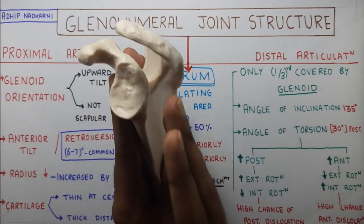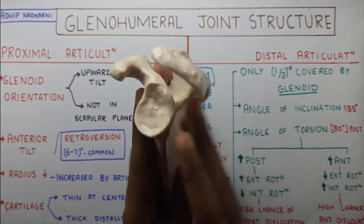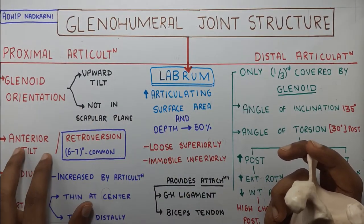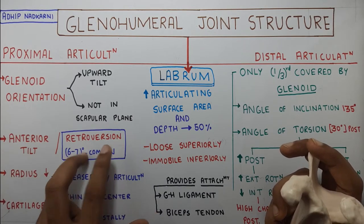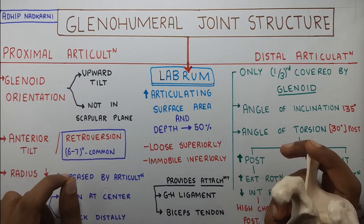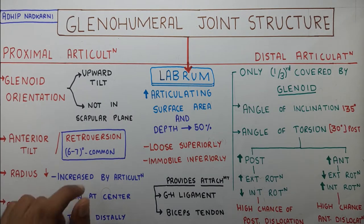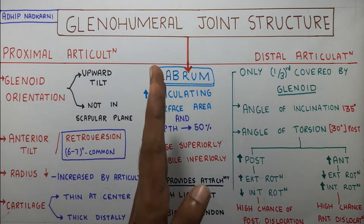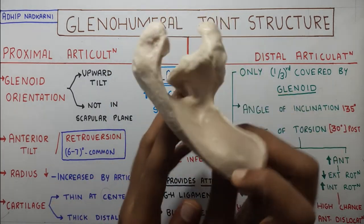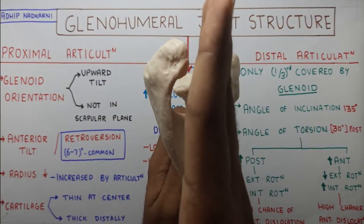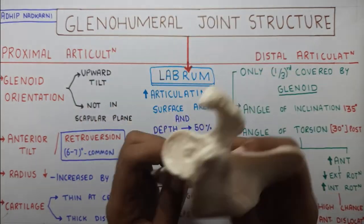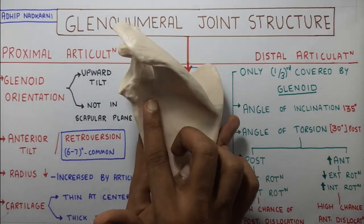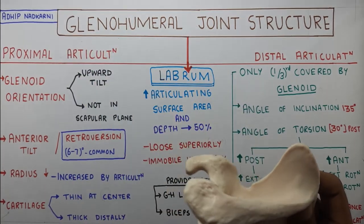The glenoid does not lie in the same direction as the scapular plane - it is tilted slightly posteriorly or anteriorly, meaning it is not in the scapular plane. There is an anterior tilt or a posterior tilt. The posterior tilt is also called retroversion. There is a small amount - around six to seven degrees - of posterior tilt of the glenoid. You can hardly see it, but there is some amount of posterior tilt.